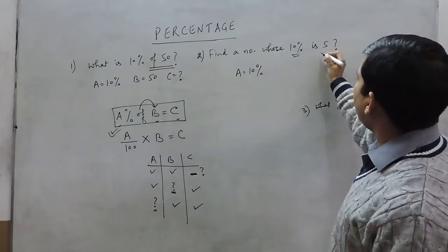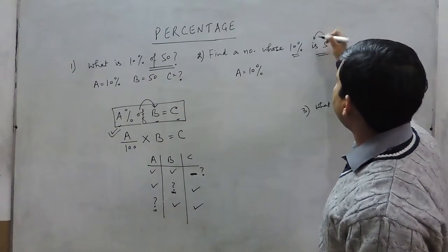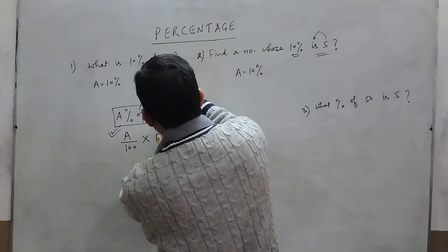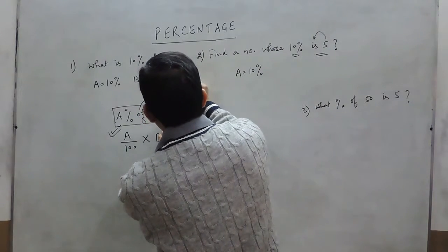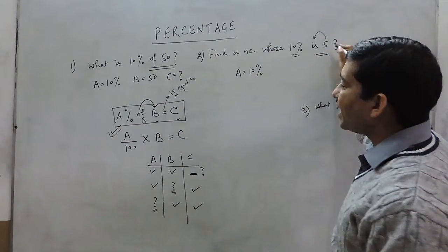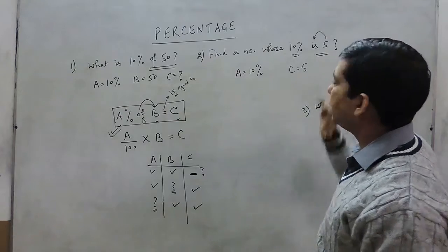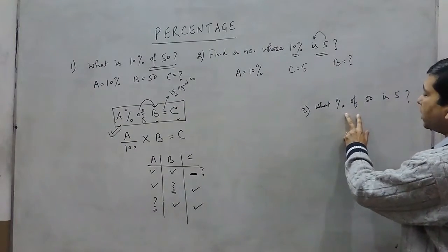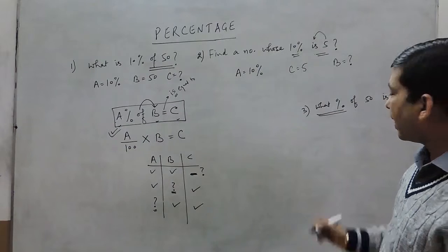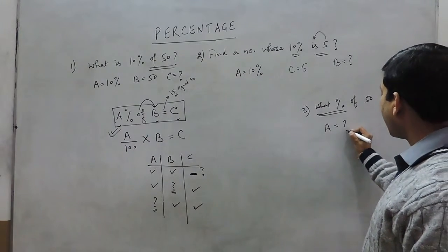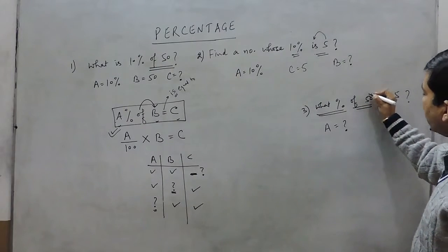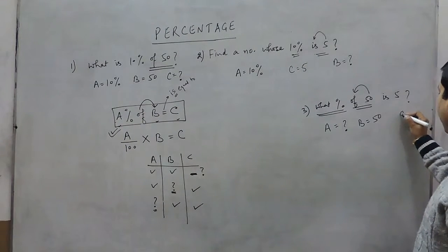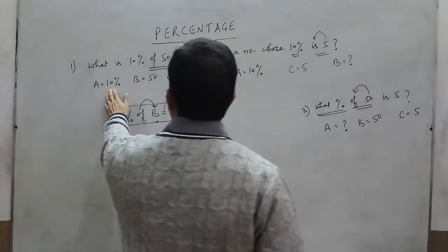In the second question, before 5 there is the term 'is,' which means 'is equal to,' so C equals 5. The third value, B, we have to calculate. In the third question, 'what percent' tells us A has to be found. Before 50 there is the term 'of,' so B equals 50, and C equals 5.